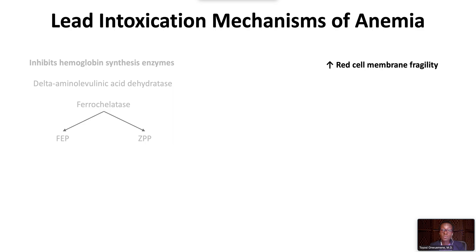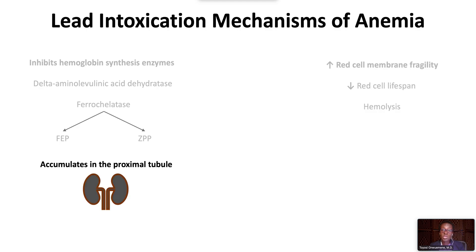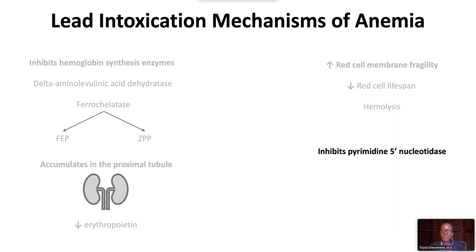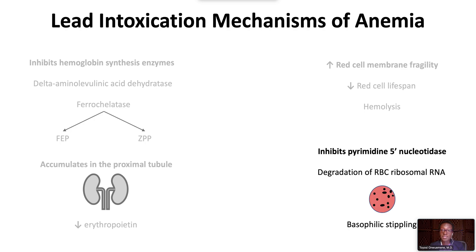Lead causes increased red cell membrane fragility, which leads to a shortened red cell lifespan and resultant hemolysis. Lead accumulation in the proximal tubule of the kidney leads to lower levels of erythropoietin. Lead also inhibits pyrimidine 5'-nucleotidase, causing degradation of red cell ribosomal RNA that can manifest on the peripheral blood smear as basophilic stippling.